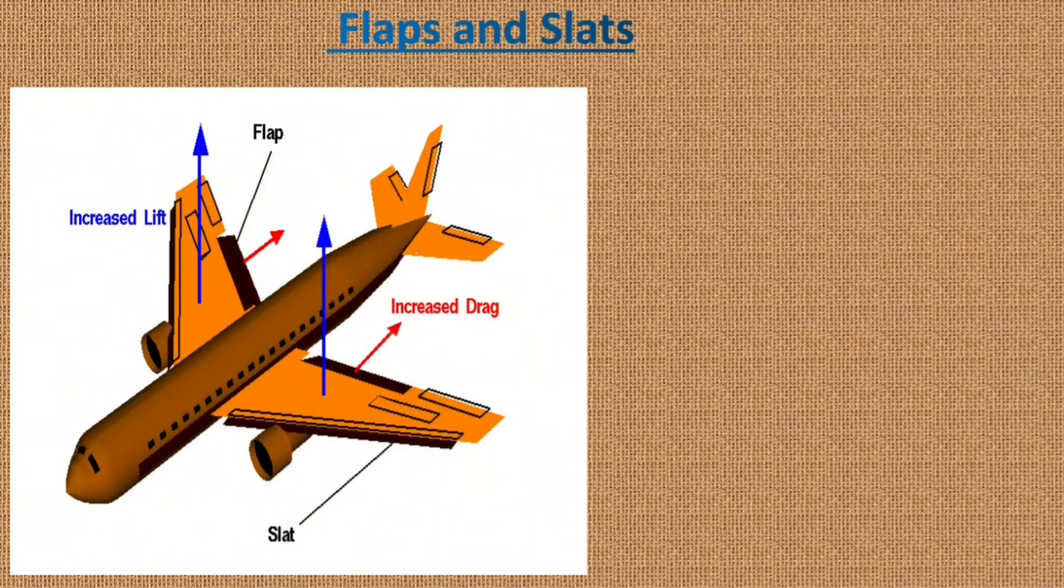Flaps and slats are high lift devices fitted at the trailing edge and leading edge of the wing. They increase camber and in most cases surface area of the wing to provide more lift and drag, helping aircraft reduce takeoff and landing distance. They also reduce the stalling speed of the aircraft.